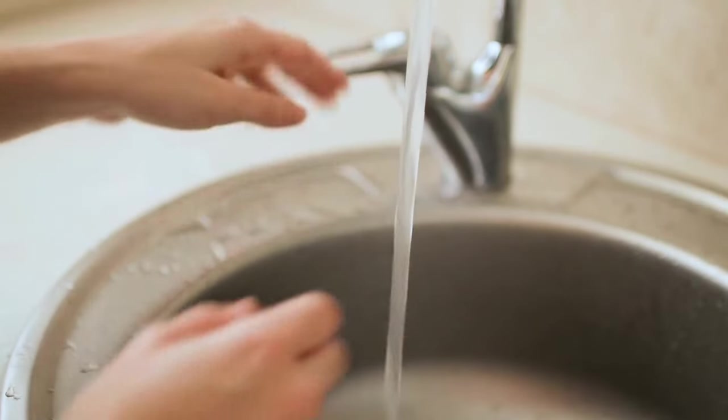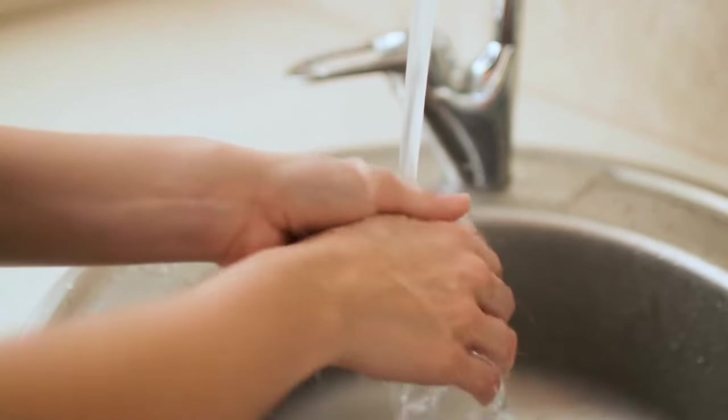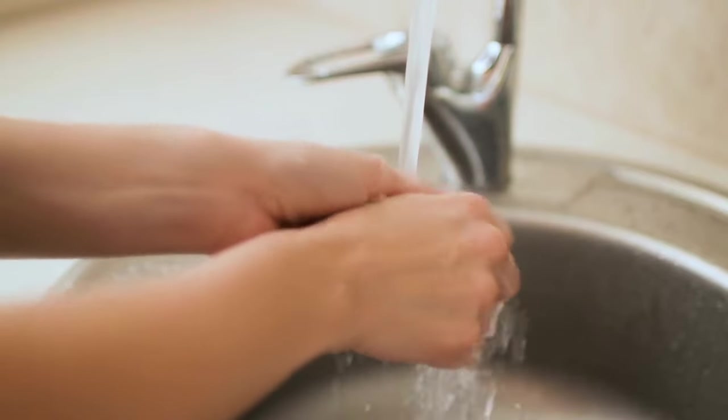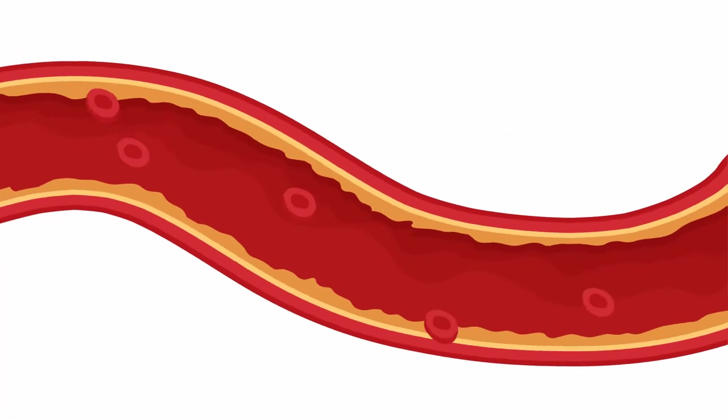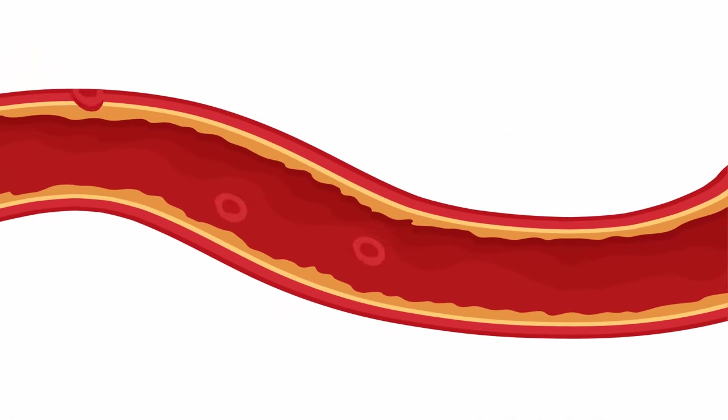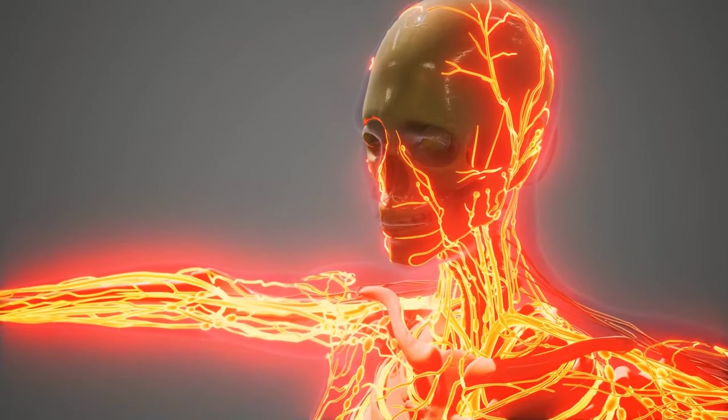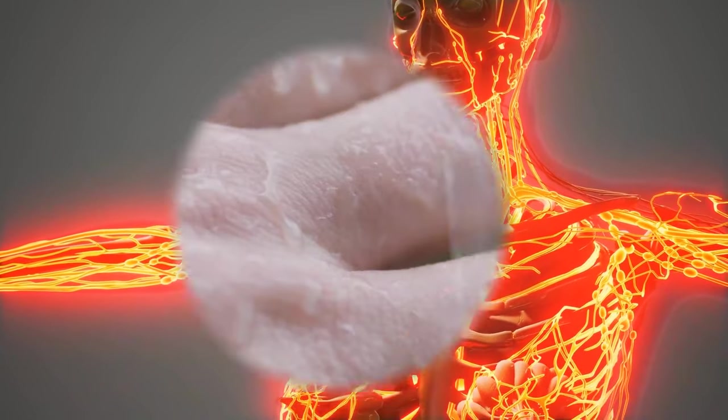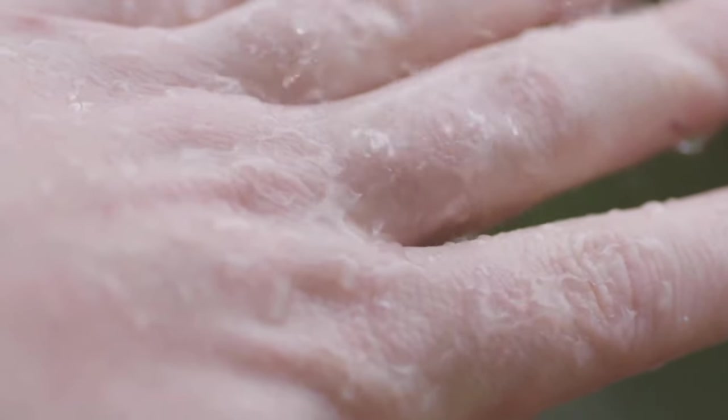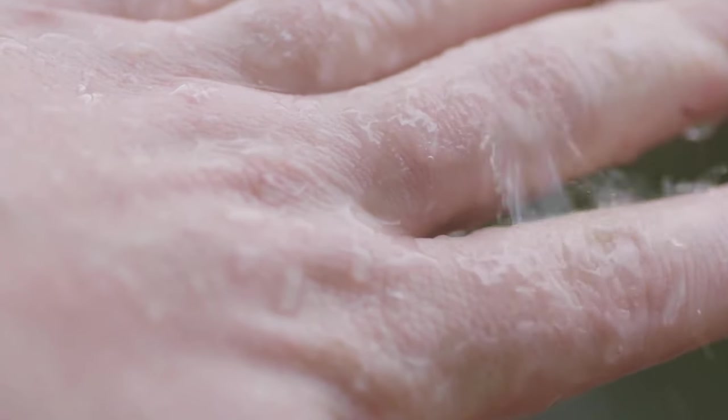Your fingers get all wrinkly after you spend too much time in the water. Pruny fingers are caused by the narrowing of your blood vessels. When you stay in the water for a long time, your nervous system makes your blood vessels shrink. Your body sends the blood away from that area. And this loss of blood makes your vessels thinner. The skin starts folding over them, forming those funny wrinkles. Scientists think this process helps us have a better grip when our hands and feet are wet.